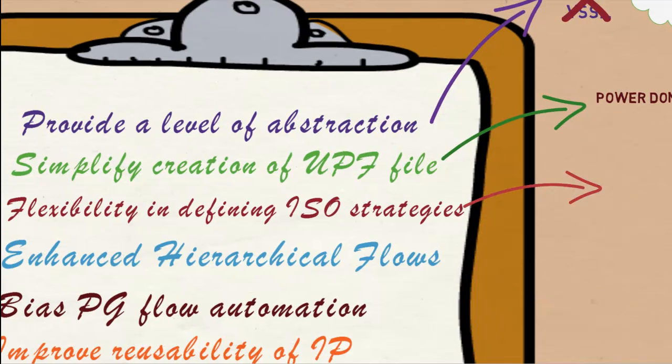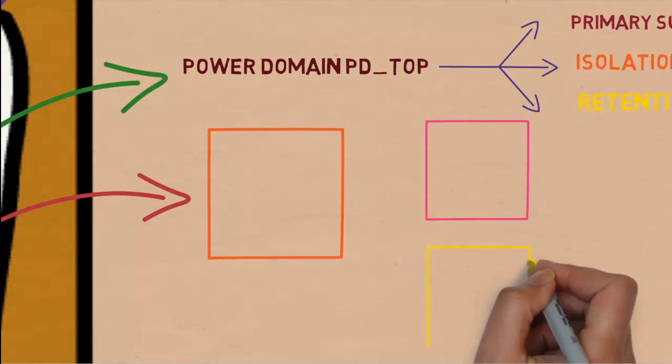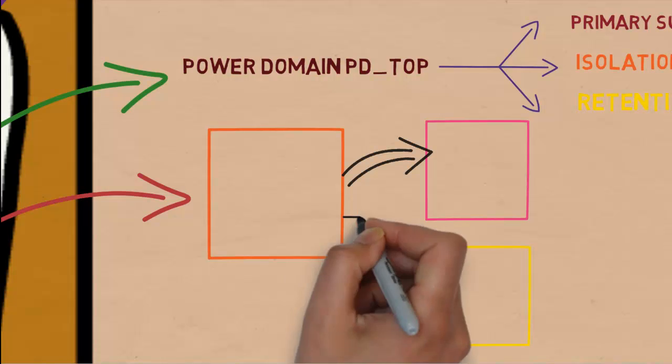Supply sets provides flexibility in defining isolation strategies. With this feature, when you want to define an isolation strategy between two specific power domains, you can use source and sync options instead of using a big list of elements.